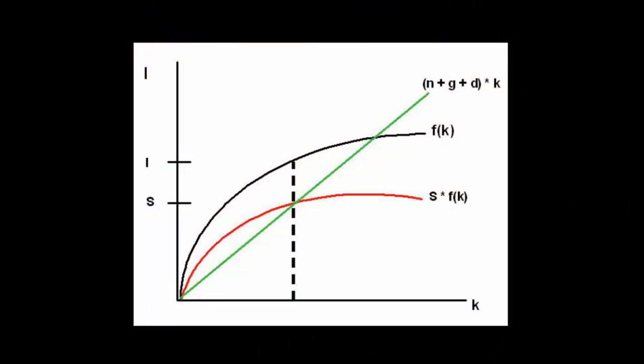One important model you'll learn is the Solow growth model. The idea is it's an economy that is growing — maybe at a stable growth rate, or maybe converging to an equilibrium as people save and the economy builds up capital and the marginal product of that capital falls until the point where you're just replacing your depreciated capital with your savings. So it's a model of convergent growth.